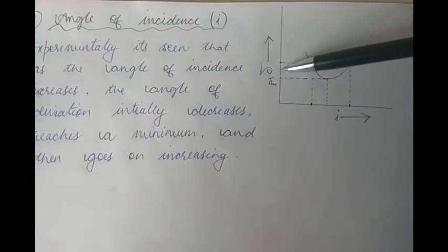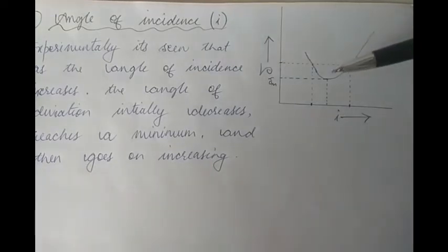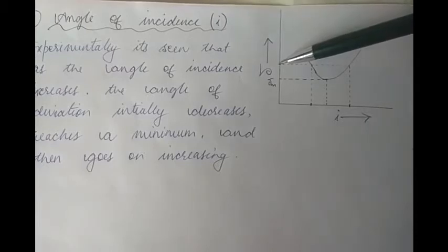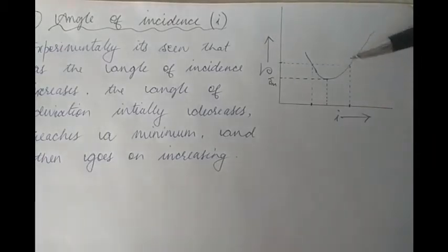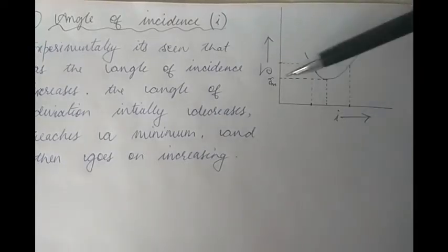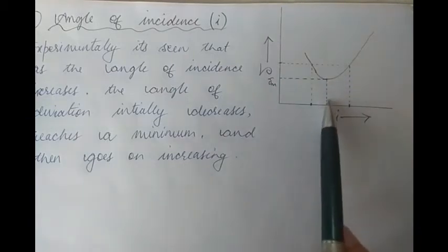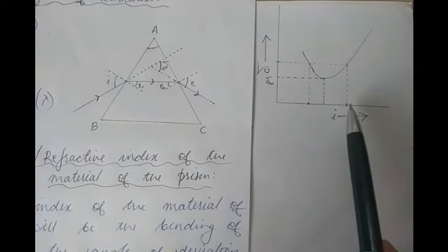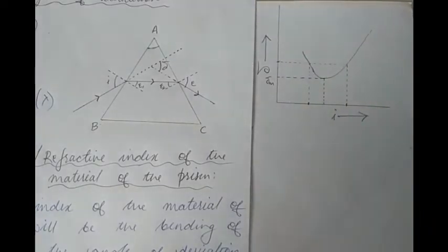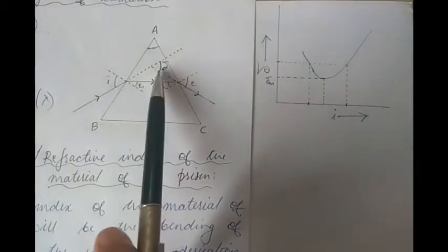Let us now consider values of the angle of deviation delta greater than the angle of minimum deviation delta m. What we see is that for all values of angle of deviation greater than delta m, there are two values of the angle of incidence. Except at the value of angle of minimum deviation delta m, in which case there is only one value of the angle of incidence. What we understand is that these two values of the angle of incidence for a given value of the angle of deviation are actually representing the angle of incidence and the angle of emergence for that value of deviation, as you can see in this picture.